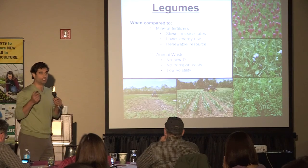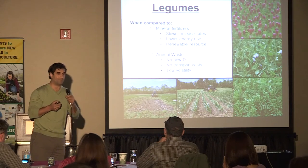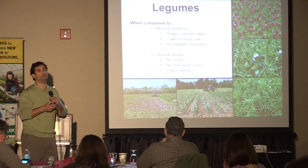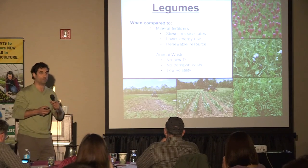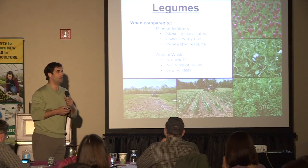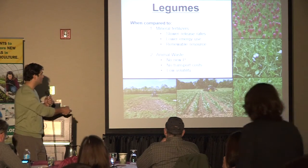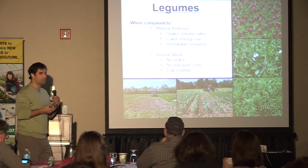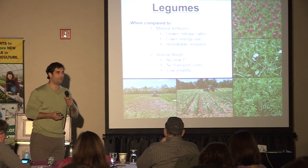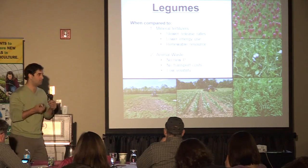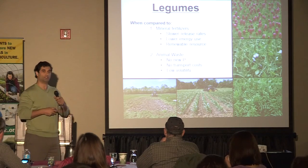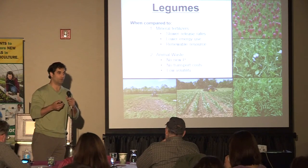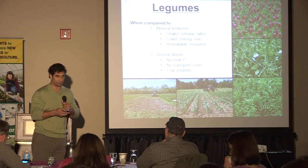Legumes are not very good at weed suppression and can have some concerns with leaching. But when you compare these to mineral fertilizers, they have a slower release rate but a much lower energy use. The energy embodiment to produce mineral fertilizer is quite high, so legumes represent a really big reduction in overall carbon footprint for your nitrogen source. They're a renewable resource, and compared to manure they don't have volatility, transport, or phosphorus concerns.